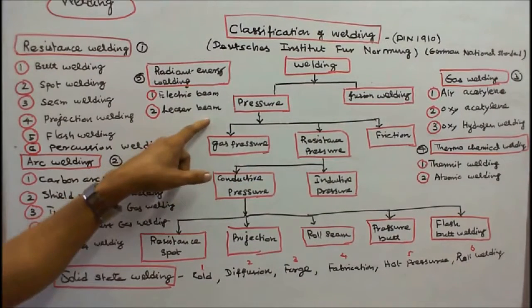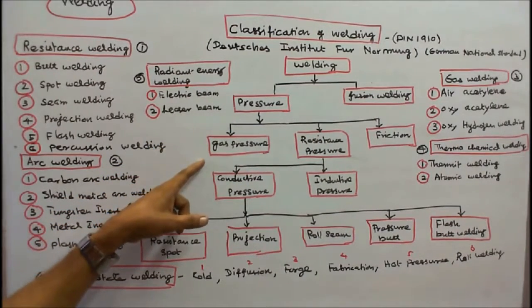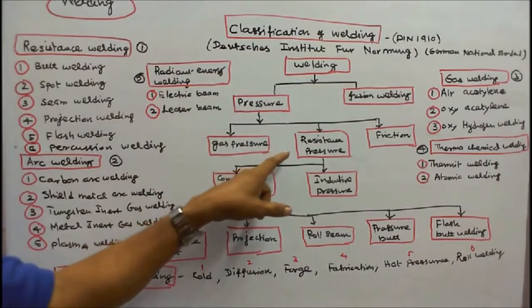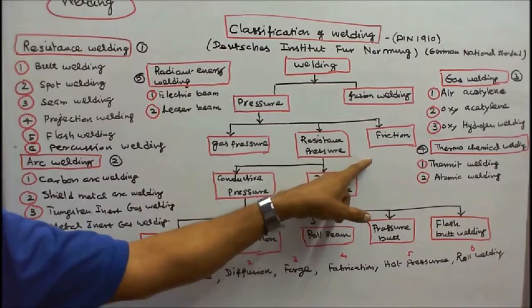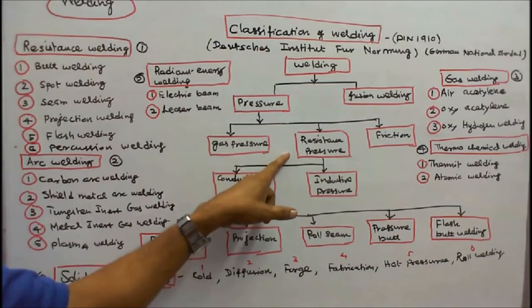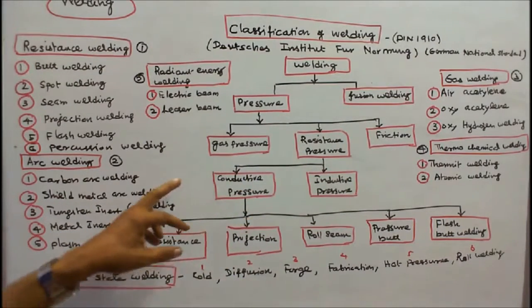There are three types of pressure welding. Number one: gas pressure welding. Number two: resistance pressure welding. Number three: friction welding. The second is inductive pressure welding.